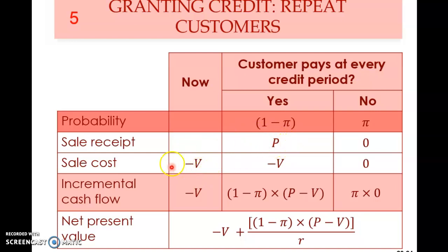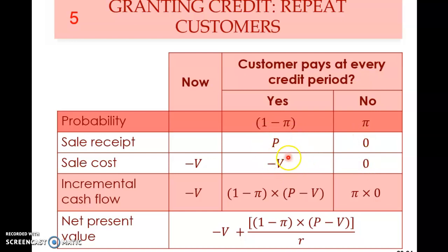If the customer pays, that means they are paying for the earlier purchase. At that same point, you sell again to the customer, so there is another −V. That is why there is a second negative V — because payment and the next sale occur simultaneously. But if they don't pay, you receive nothing, and of course you don't sell to that customer again. So there is no further loss — just zero and zero.